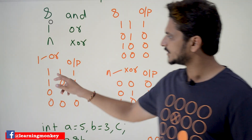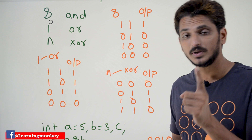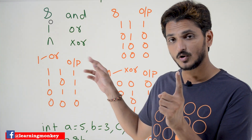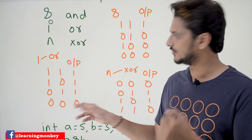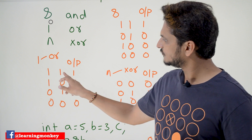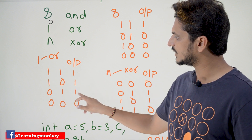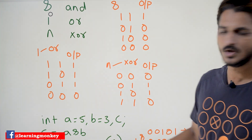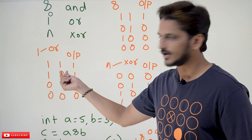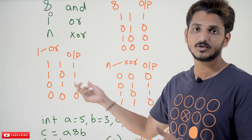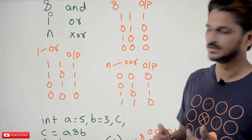Similarly, bitwise OR operator: if any one of the bits is one, the OR operator is going to produce output one, otherwise it is zero. So: 1 OR 1 = 1, 1 OR 0 = 1, 0 OR 1 = 1, 0 OR 0 = 0. At least one bit should be one, then only the output is one, otherwise it is zero. That is what OR operator means.